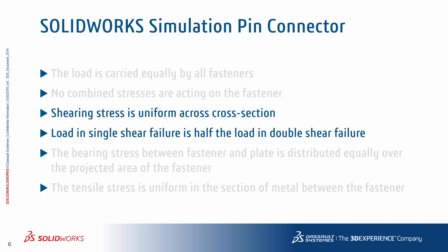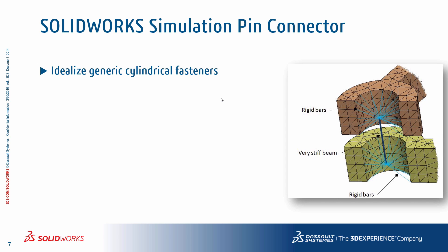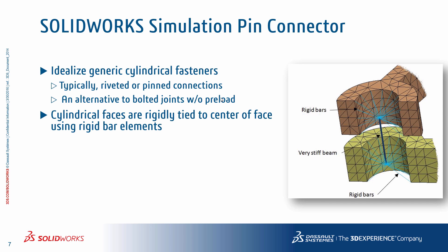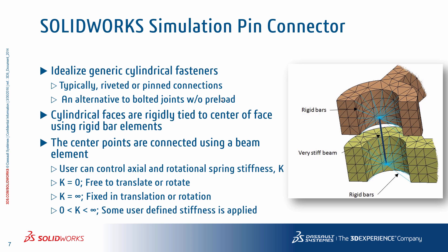By using Solidworks Simulation and connectors to model fasteners, you can get a much more informative model of a fastened system than using any traditional method. The pin connector provides an idealized model of a generic cylindrical fastener — most typically pins or rivets. A bolt can be considered a cylindrical fastener as well, but due to preload and head/nut/washer interactions, a bolt connector feature was specifically designed in Solidworks Simulation to handle just bolts. Internally in FEA terms, when you select two cylindrical faces in the definition of a pin, each face is constrained using a mathematically rigid method to a central point, and those two central points are then tied together using a beam entity with variable stiffnesses based on further user input.